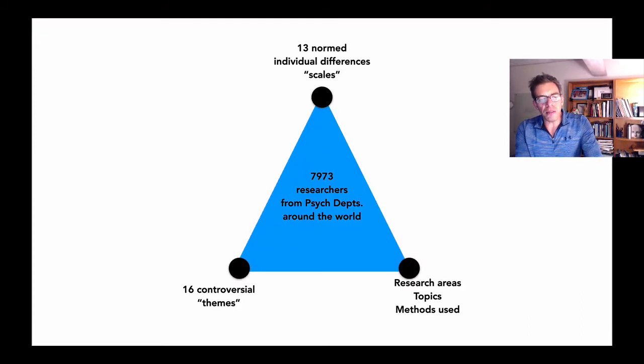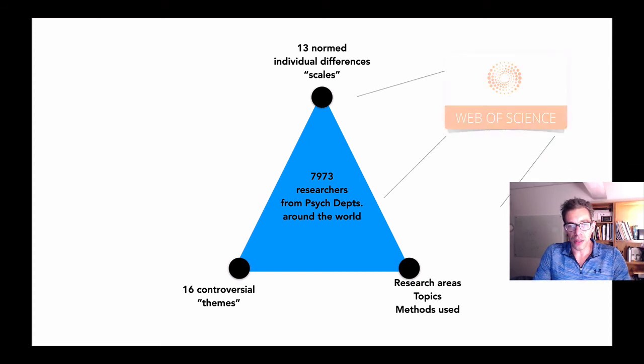We were able to link about 70% of the authors to their records and web of science. This allowed us to compute distances between people's patterns of citations, the similarity of their abstracts, and then relate them to differences in their responses to our themes and on cognitive traits.